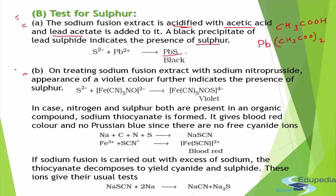For the second sulfur test, we take the sodium fusion extract and treat it with sodium nitroprusside, which is a complex [Fe(CN)5NO]2-. If a violet color appears, it indicates the presence of sulfur.